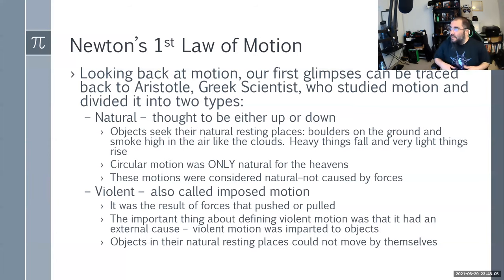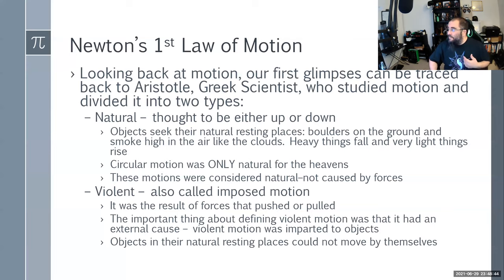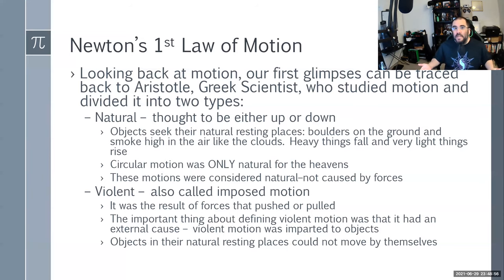Natural motion was either up or down — objects seek their natural resting places. If a boulder is on the ground, that's where it's supposed to be. Heavy things fall, light things rise. Circular motion only occurred for the heavens — the sun rotating around the earth, which we know wasn't true. Violent or imposed motion was the result of a force being pushed or pulled — an external cause imparted upon an object. Objects in their natural resting place could not move themselves; a force was required.